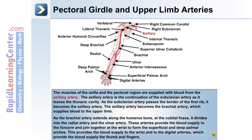As the brachial artery extends along the humerus bone at the cubital fossa, it divides into the radial and ulnar arteries. These arteries provide blood to the forearm and join together at the wrist to form the superficial and deep palmar arches. This provides blood supply to the wrist and to the digital arteries, which supply blood to the thumb and fingers.